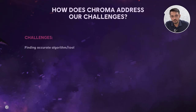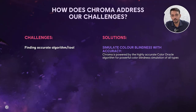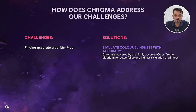The first challenge for us to address was accuracy of the algorithm. Chroma is powered by the highly accurate Color Oracle algorithm, offering robust colorblindness simulation for all types. We conducted multiple tests over an extended period to identify the algorithm that could simulate colorblindness filters most accurately. Through intensive testing with different algorithms, we found that the Color Oracle algorithm consistently topped our benchmarking charts and closely matched real-world conditions.